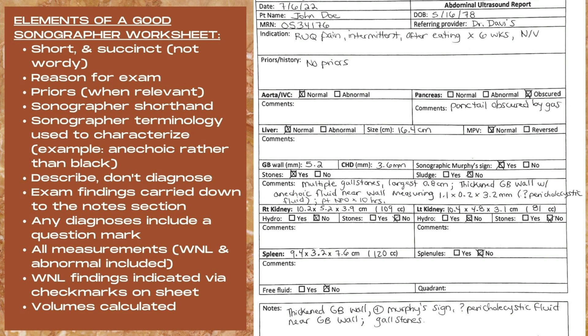As a final check, ensure that all measurements — both normal and abnormal in all volumes — have been calculated, and that all normal findings have been indicated via check marks on the sheet. It's also crucial to look over your findings and ask yourself: did this exam answer the question of why the patient is there? In this case, the pathology visualized matches the patient's symptoms. It's also important to note that absence of pathology can also answer a patient question by ruling out that type of pathology.